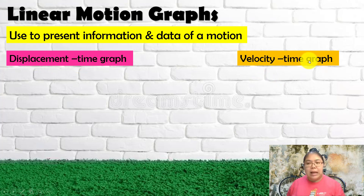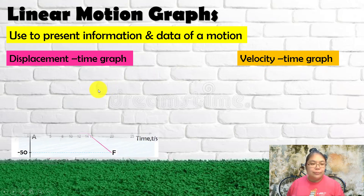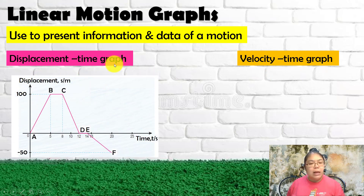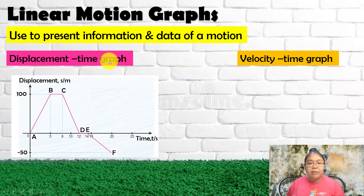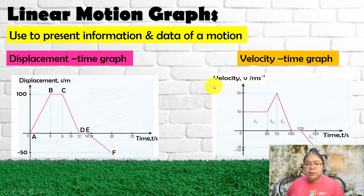For the displacement-time graph, we refer to the y-axis showing displacement versus time, so we call it the DT graph. For the other one, the y-axis is labeled with velocity, so we call it the VT graph.